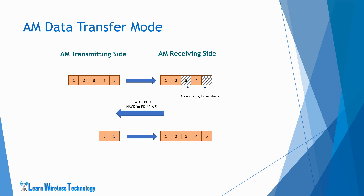When the PDUs arrive at the receiver, it shall send a status report indicating the correct reception of PDUs. It's not always necessary that retransmission will trigger after receiving the status PDU. The HARQ protocol can also interact with the RLC protocol to inform the transmitter about the missing PDUs, and this could also be used for triggering the retransmission without waiting for the status PDU.